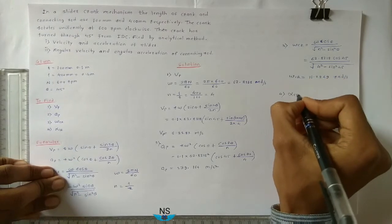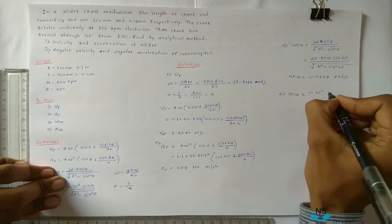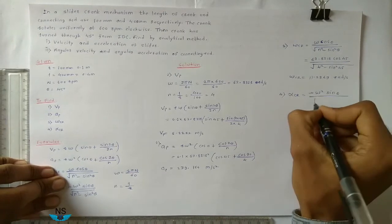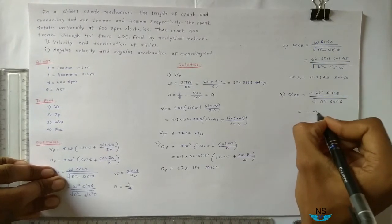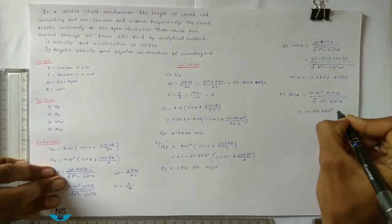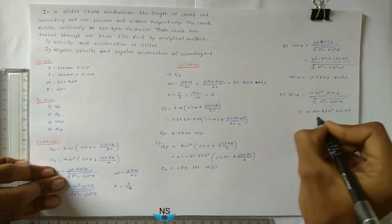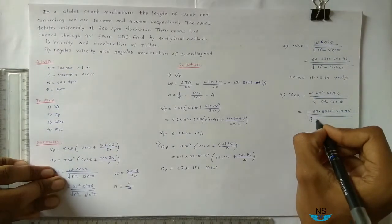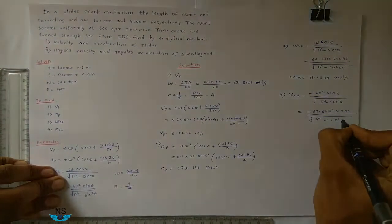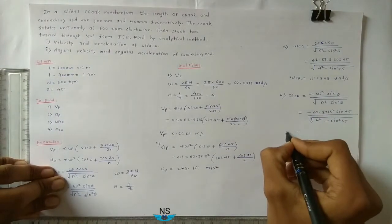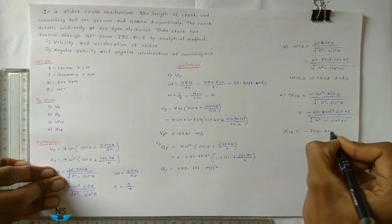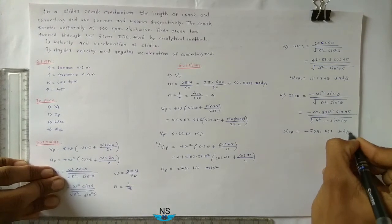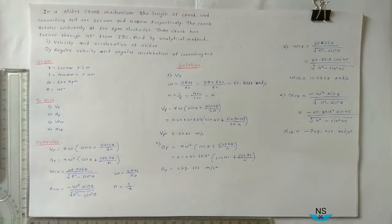Fourth, angular acceleration of connecting rod: α_cr equals −ω²·sin θ divided by the square root of (n² − sin² θ), equals −(62.8318)² × sin 45° divided by the square root of (4² − sin² 45°). α_cr equals −709.052 rad/s². These are the required answers.